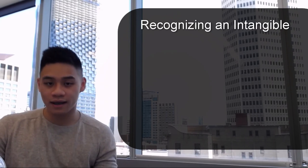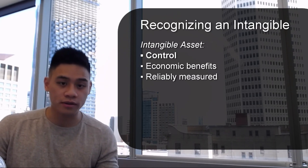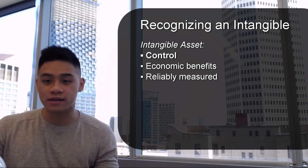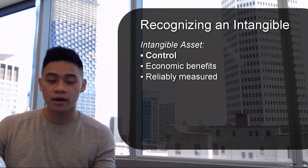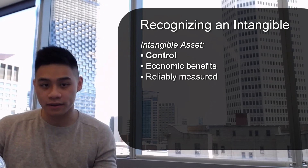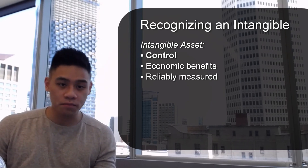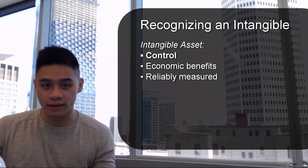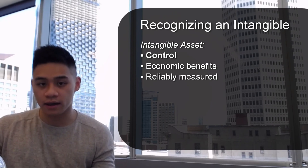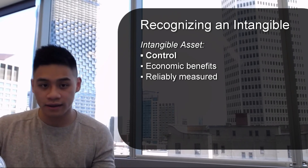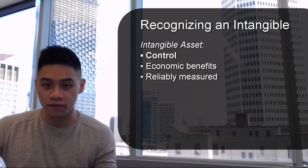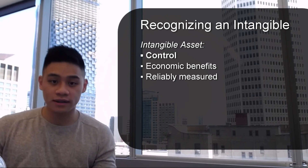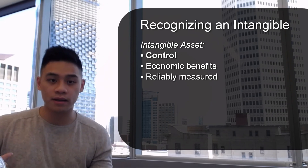The criteria to recognize an intangible asset has three points. First, we have control of the resource and control of the access to the benefits. Second, it is probable that the resource will provide future economic benefits. Third, the resource can be identified separately, and the cost and value of the resource can be reliably measured.